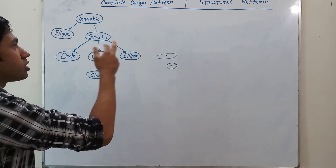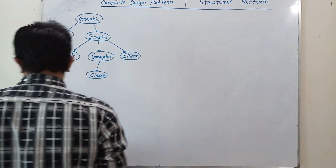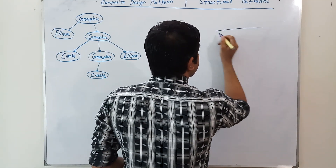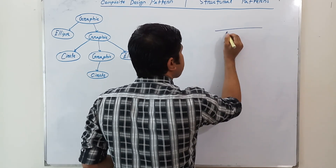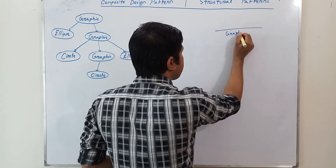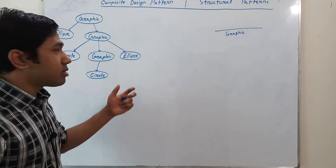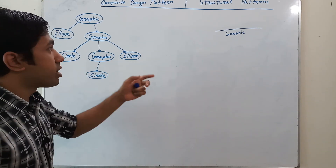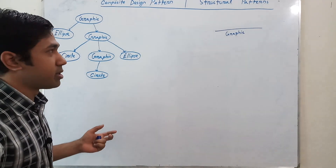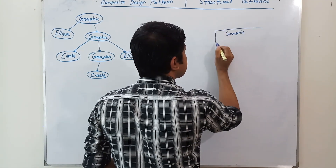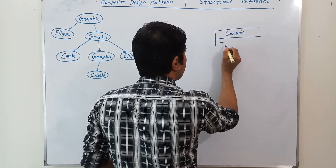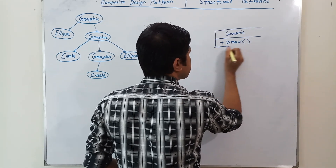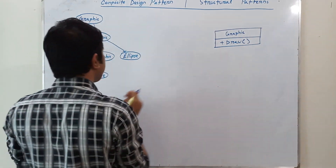And to solve this problem, the composite design pattern has come. Now let's see how the composite design pattern works using a UML diagram. The composite design pattern solves the problem using an interface so that the client can access those objects through the interface and treat all the objects uniformly. First, we declare the interface.